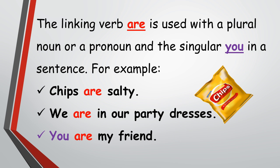'Salty,' 'in our party dresses,' and 'my friend' are the information about the given subjects. In the first two examples, the linking verb 'are' is used with the plural noun 'chips' and the plural pronoun 'we,' whereas in the last example, 'are' is used with the singular 'you.'